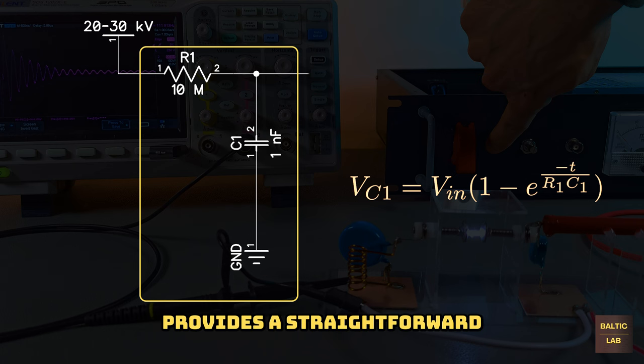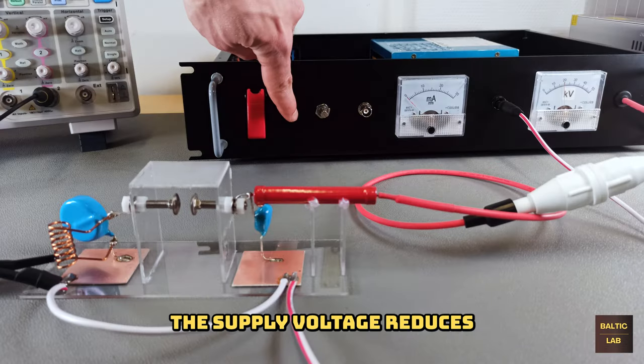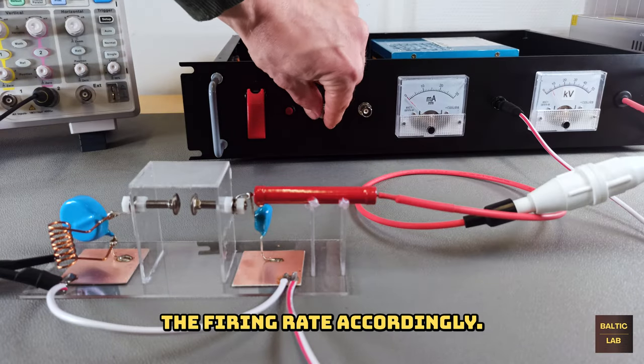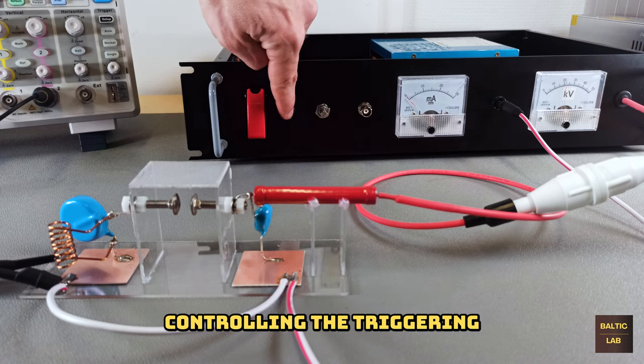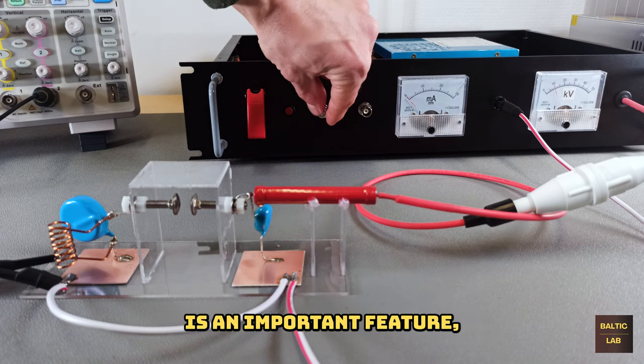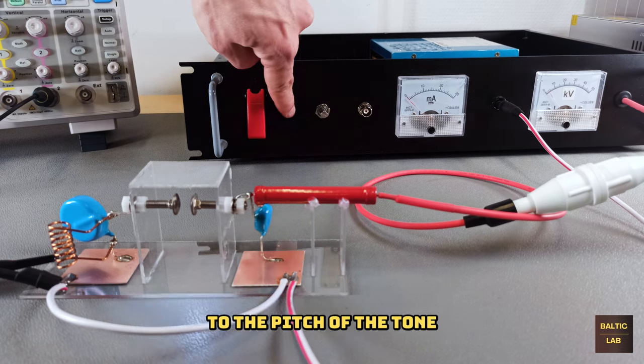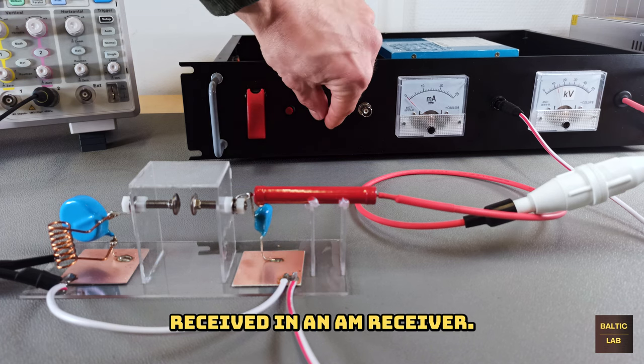This time dependence provides a straightforward method for modifying the spark gap's triggering frequency. Increasing the supply voltage increases the firing rate of the spark gap, and reducing the supply voltage reduces the firing rate accordingly. Controlling the triggering frequency is an important feature as it directly relates to the pitch of the tone received in an AM receiver.